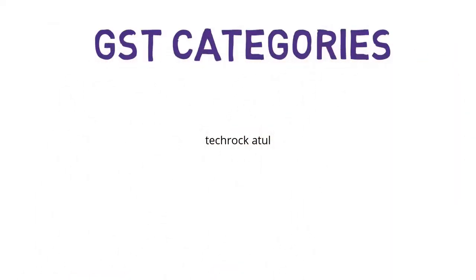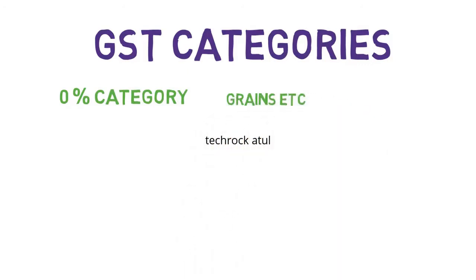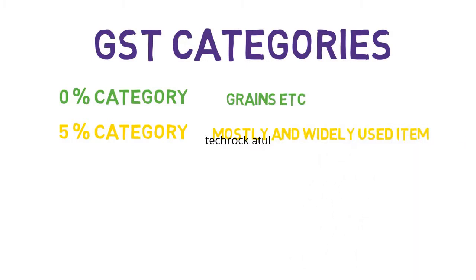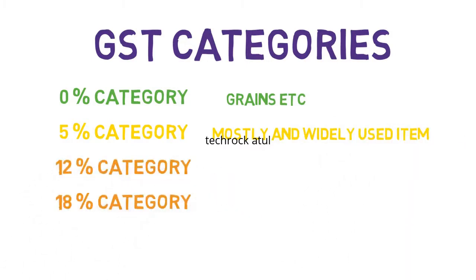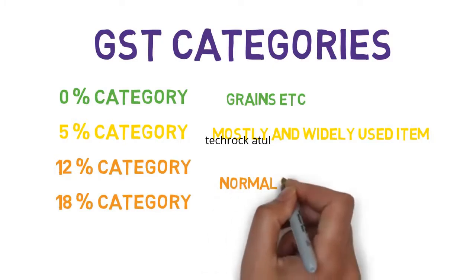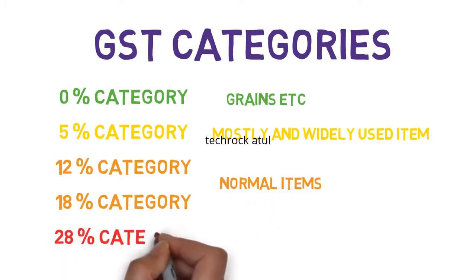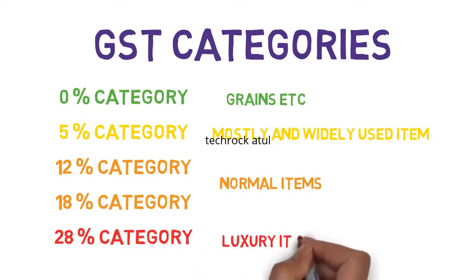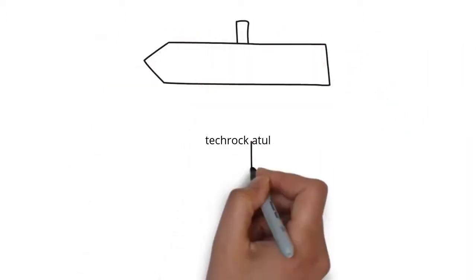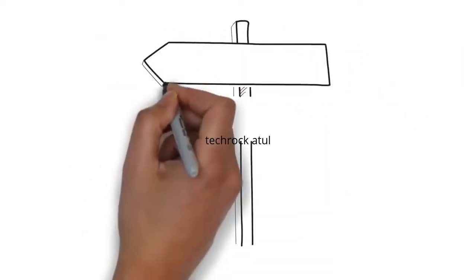There will also be five rate categories under GST in India: 0% category, which applies on food grains, etc.; 5% category, which applies on most widely used items; 12% and 18% categories, which apply on items that are normally used; and 28% category, which applies on luxurious items.